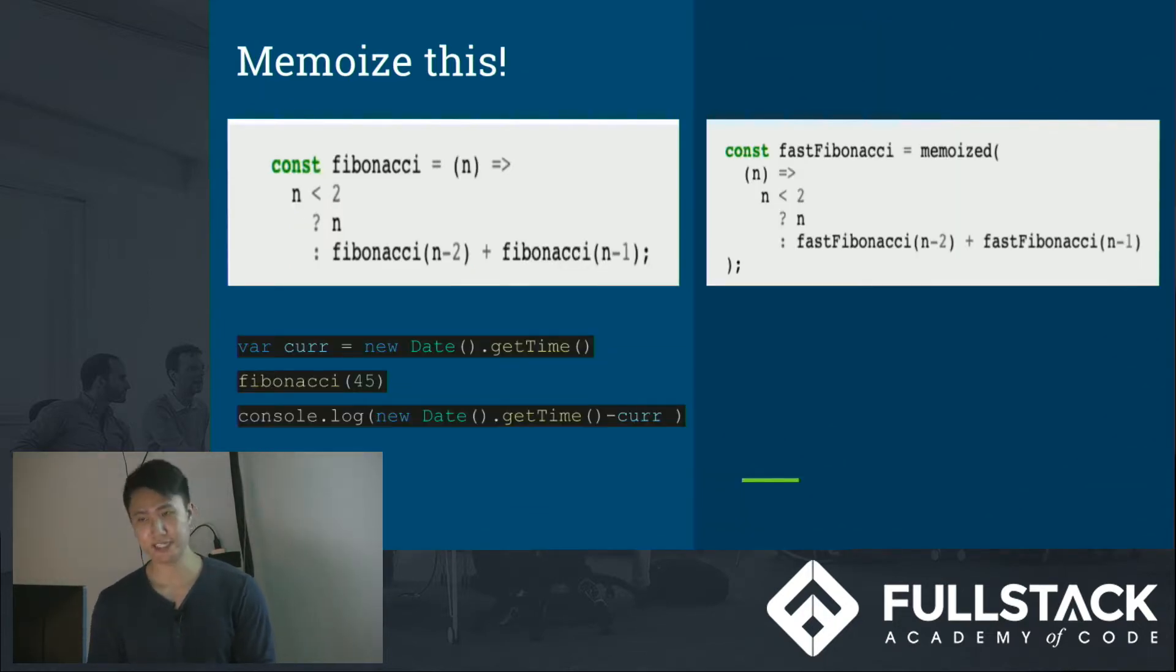Now, we're talking about the basic recursive solution for a Fibonacci number. Now, on the left is the basic solution. And on the bottom, you can see I wrote a little bit of code to show you how to get the time. Say you wanted to paste this into the console, your Chrome console. If you paste that exact code from top down, you would be able to get the amount of time it took for this whole thing to run. So, for Fibonacci 45, at least.